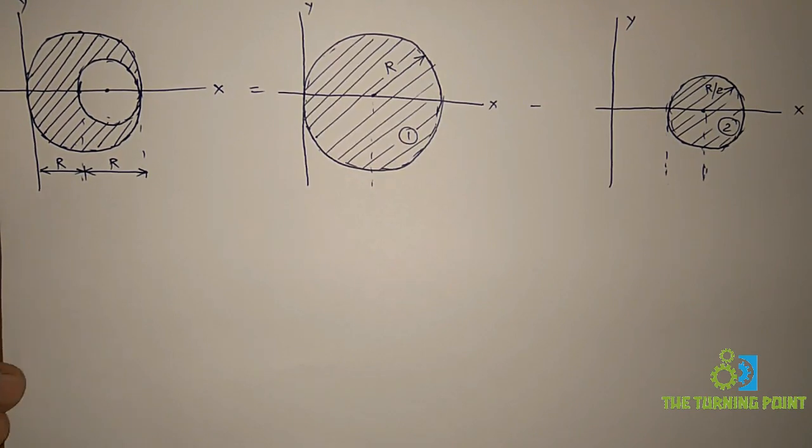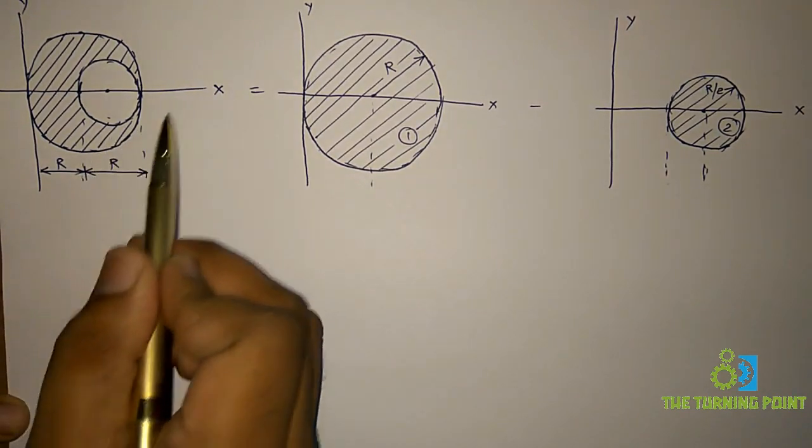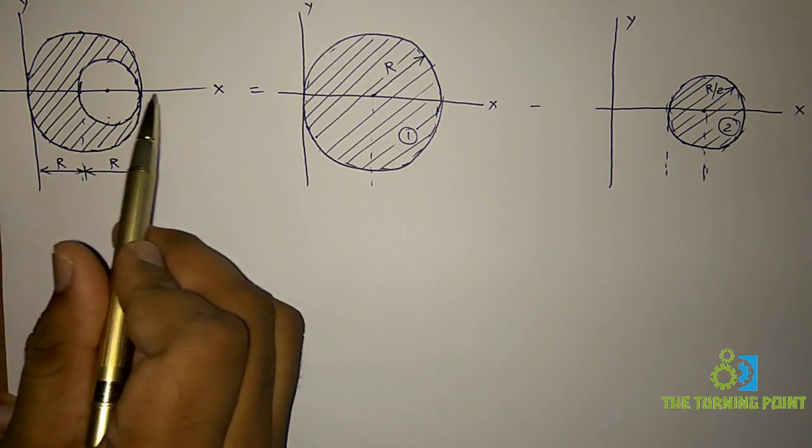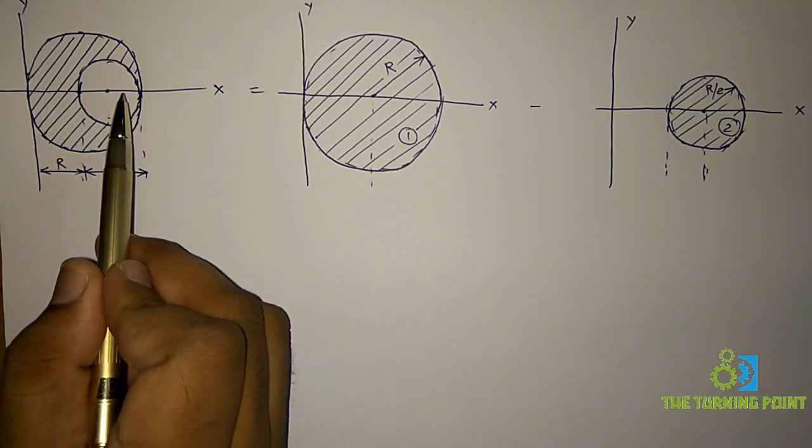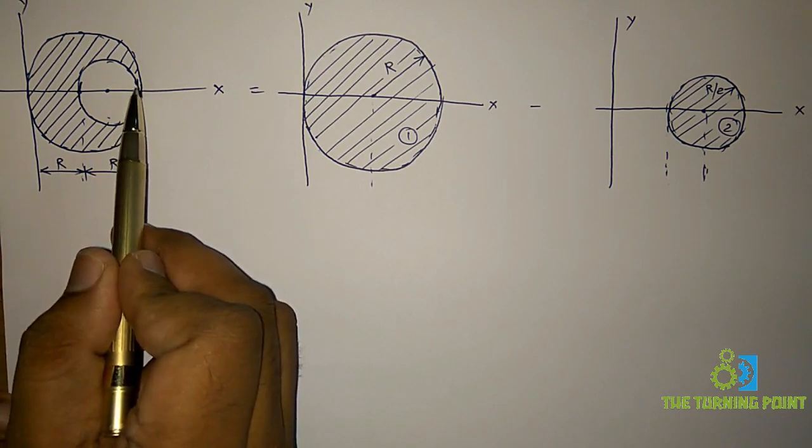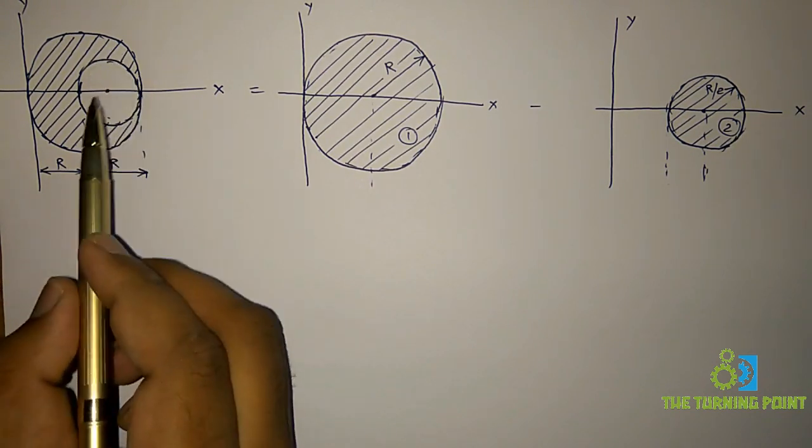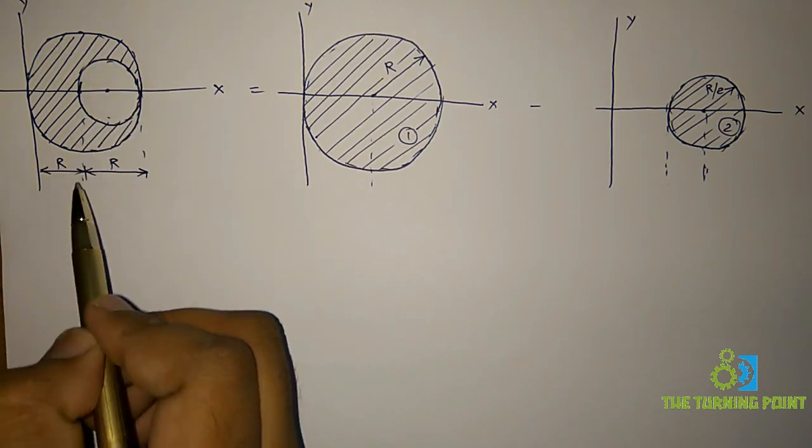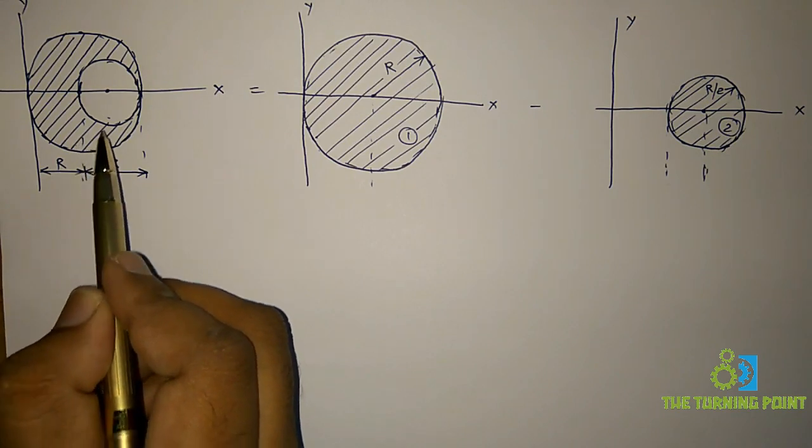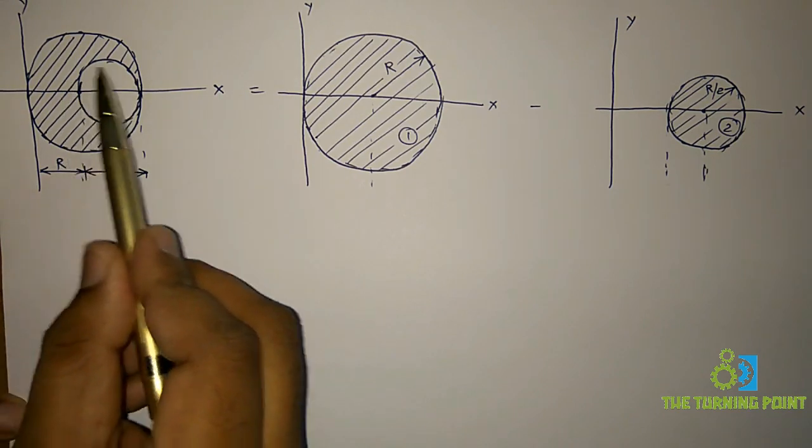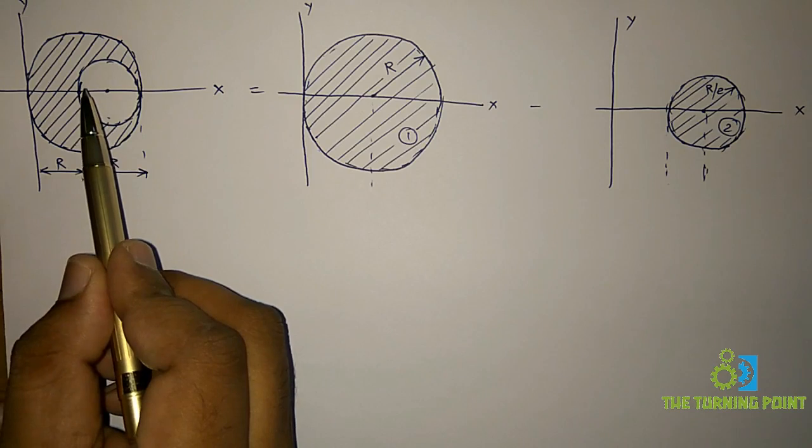If you observe one thing, the given geometry is symmetrical about x-axis. That means whatever may be the area present above the x-axis, the same amount of area is below x-axis. So that is called symmetricity. So the given geometry is symmetrical about x-axis.